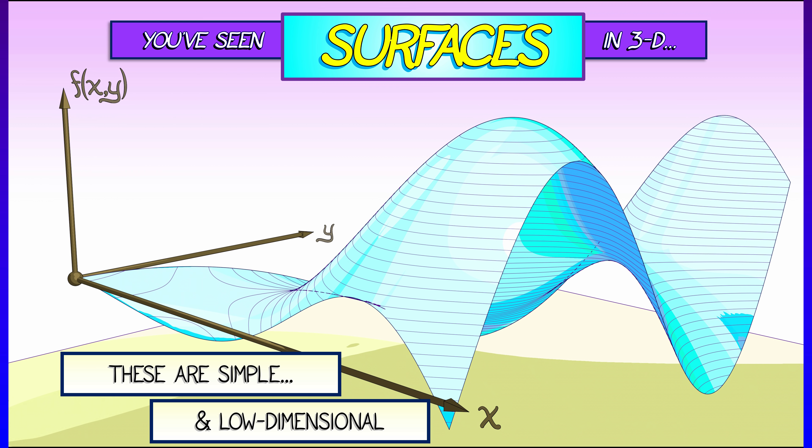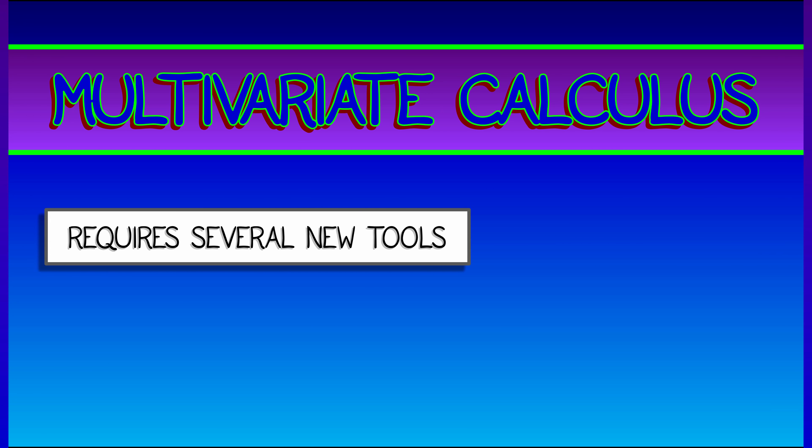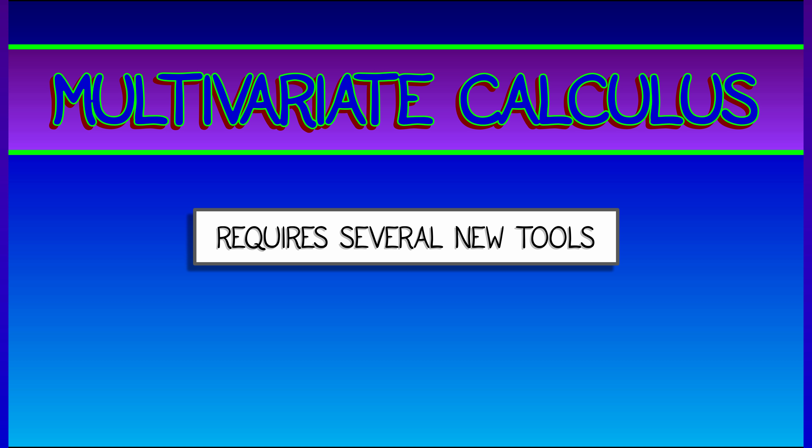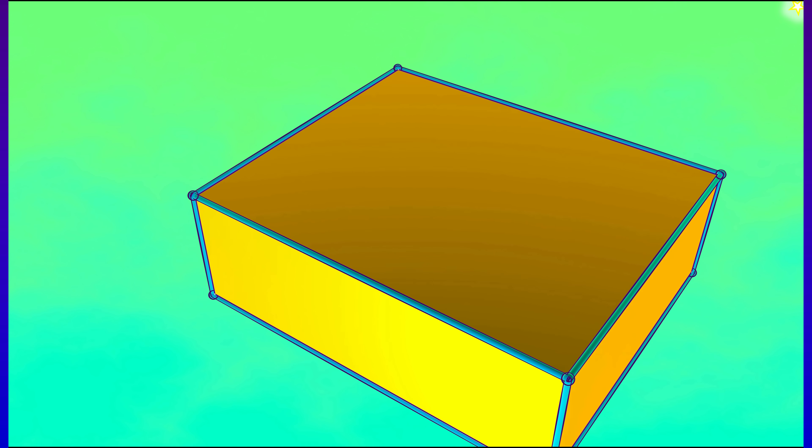Now these are simple. They're low dimensional. You can draw pictures and see what's happening. But that's not all. We're going to see lots of examples of multivariate functions in coordinate systems and coordinate changes, where we're working often not in 2D or 3D, but in arbitrary dimensions.